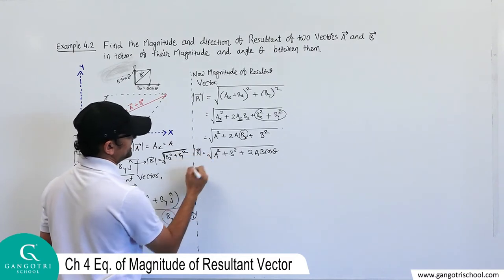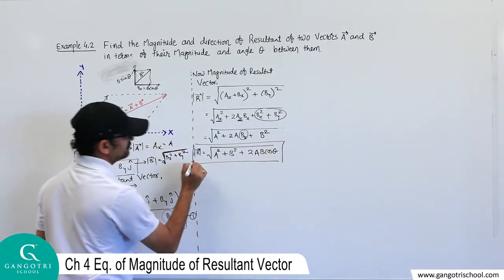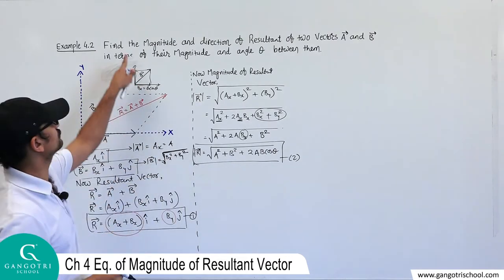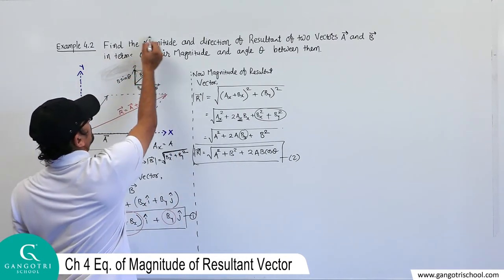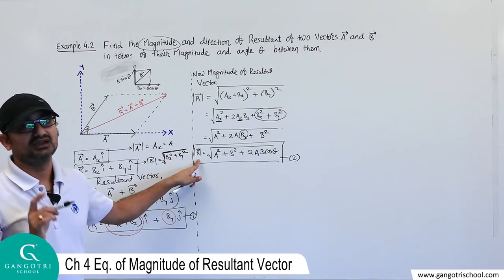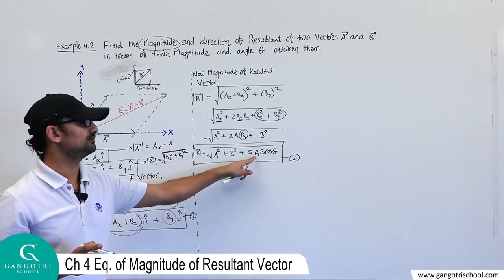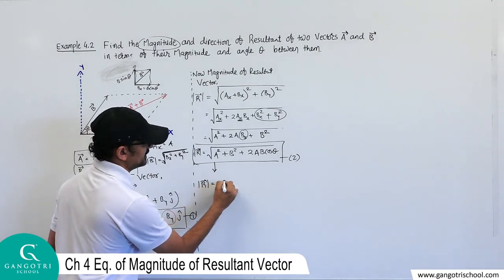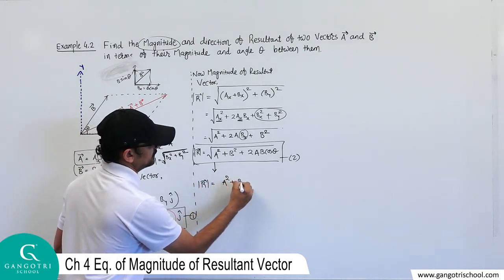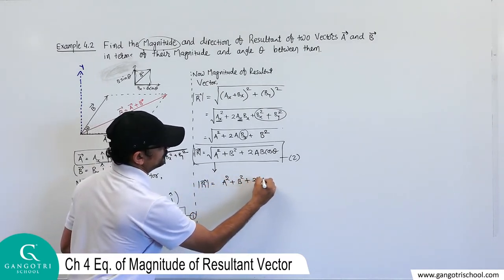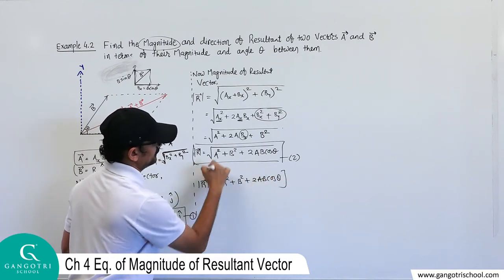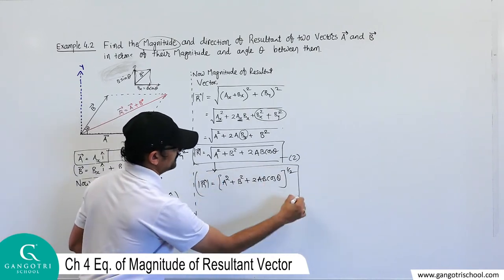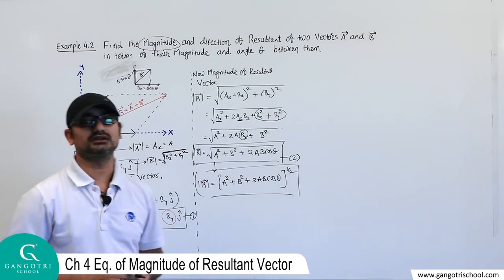This gives us the magnitude of the resultant vector: magnitude of R = √(a² + b² + 2ab·cosθ), which can also be written as (a² + b² + 2ab·cosθ)^(1/2). This is equation number two — the most important result of this illustration.